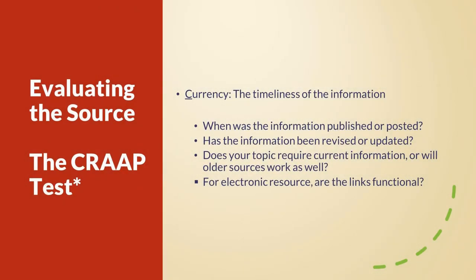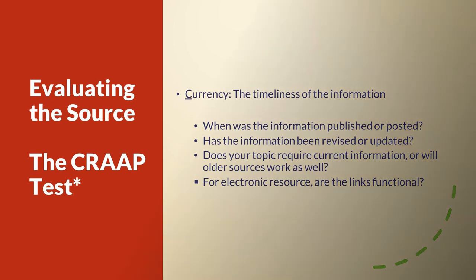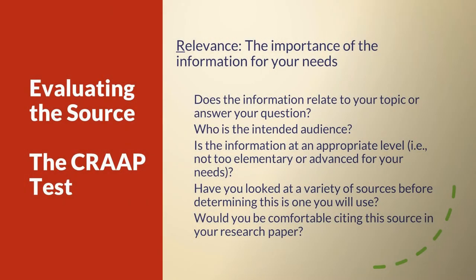Now that you have done your searching and found some results, you have to decide which ones are best. Use the CRAAP test as a guideline. Currency refers to the timeliness of the information: when was it published or posted, is this an old version that needs updating, does your topic require current information, and if found on the web, do the outbound links still work? Relevance is the importance of the information for your needs: does it relate to your topic, who is the intended audience, is it at an appropriate level, have you looked at a variety of sources, and how comfortable are you citing it?